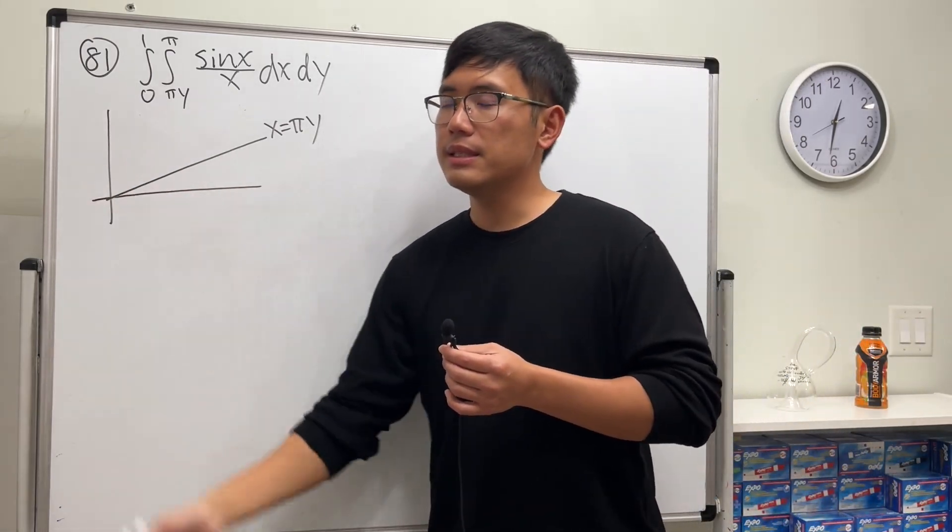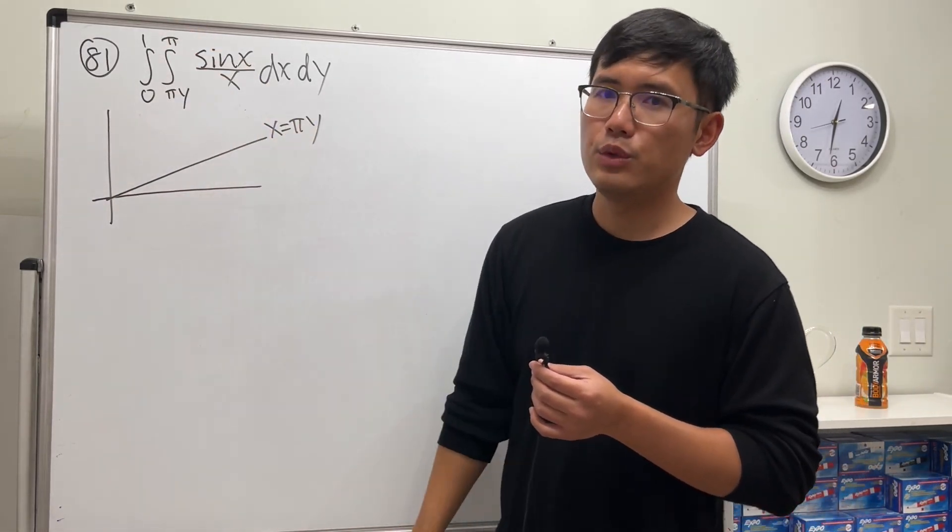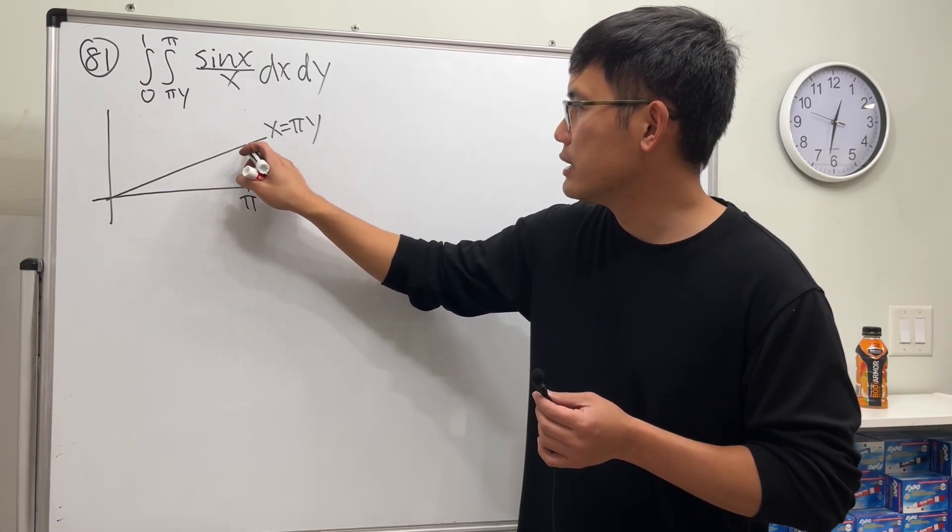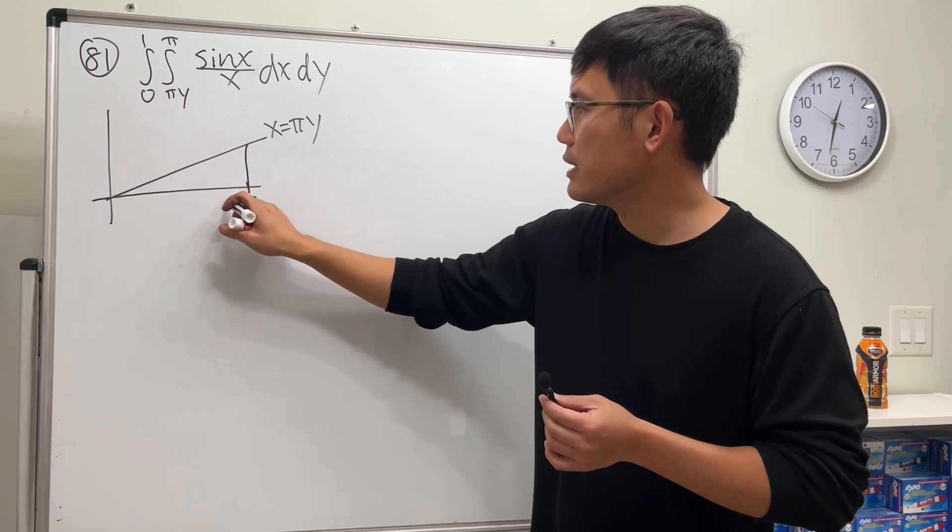So we look at this, and then we go to x is equal to π. So we have this right here, and then x is equal to π, that stays right here. So it's a vertical line. Don't forget this is x equal to π.